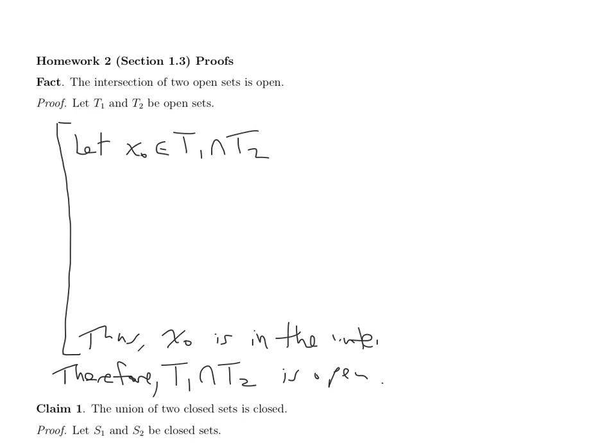Being in the interior means that we should be able to find a neighborhood around X0 that's completely contained inside T1 intersect T2. X0 is in the interior of a set if there's a neighborhood around X0 completely contained inside the set. So I need to find such a neighborhood — I have to be able to supply it, not let the reader pick an arbitrary X0.